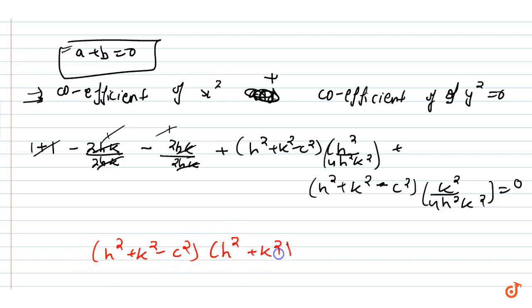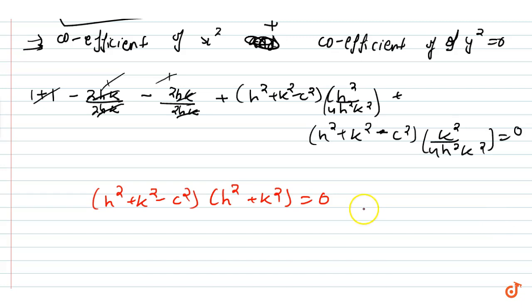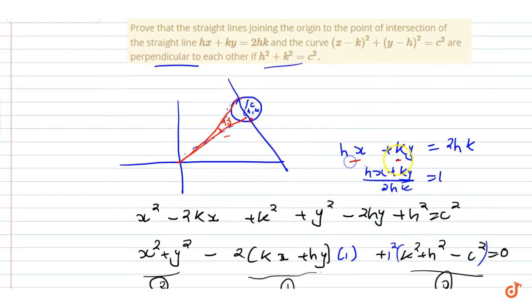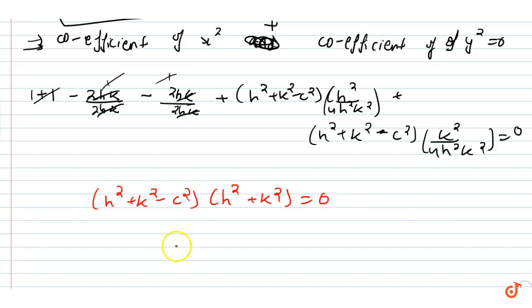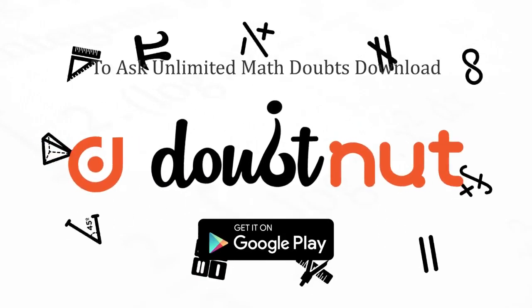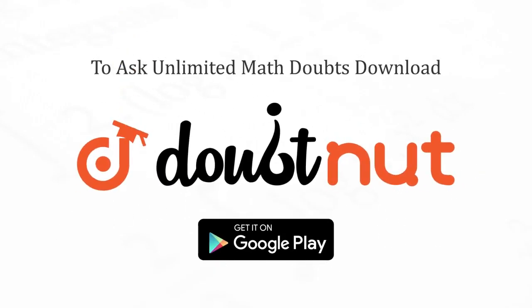We simplify to get h² plus k² equals zero, but h and k cannot both be zero because that would mean the line does not exist. So the valid condition is h² plus k² equals c². This is what we needed to prove.